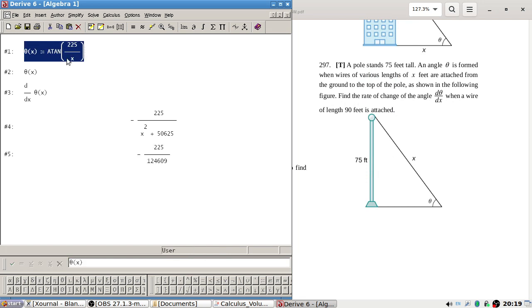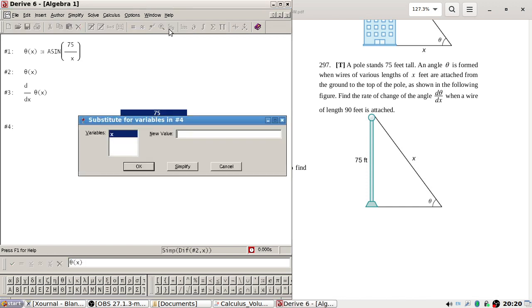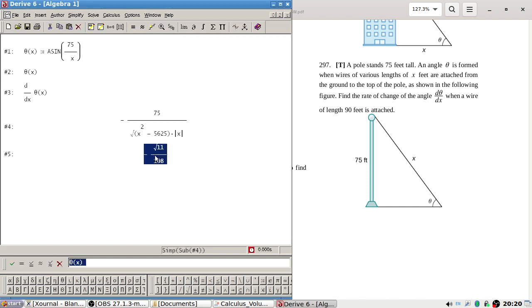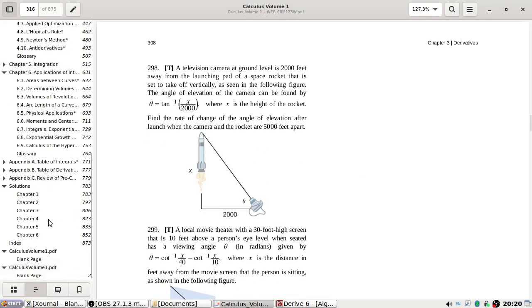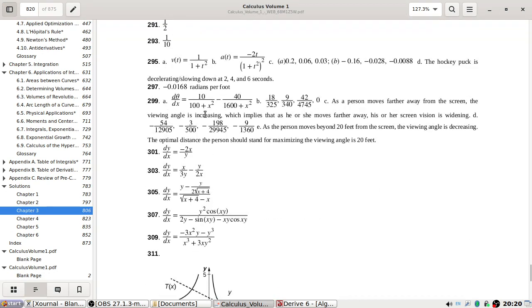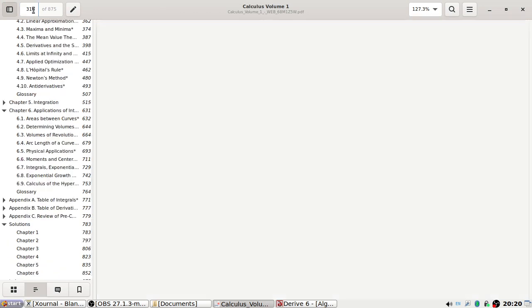297 now. A pole stands 75 feet tall. An angle theta is formed when using wire length x. Find the rate of change of the angle when x is 90. Okay, so again this time, but this is defined as arc sine. We're going to be changing 75 over x. So we want the derivative when x is 90. That's what I got. Let's check the answer. Yep, that's what I got.